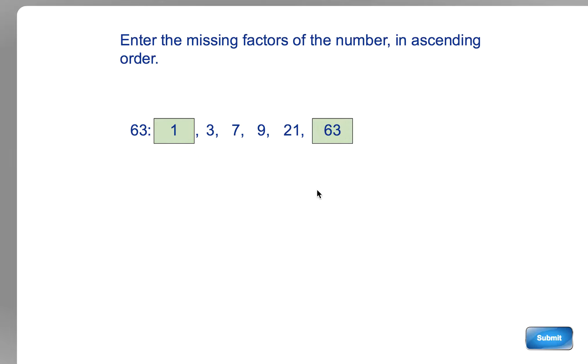So 1 times 63 gets you 63. The next easiest factor is if it's an even number, you'll always have 2 as well. So always make sure you've got 1 and the number, and 2 and something if it's an even number. And that's factors.